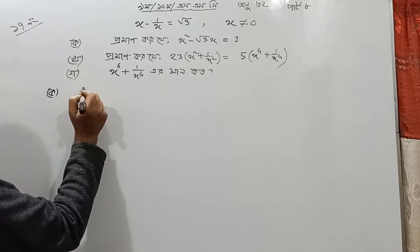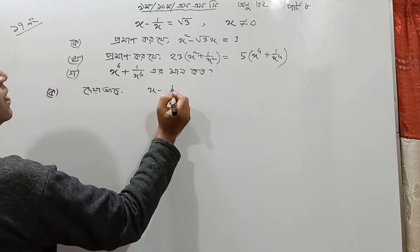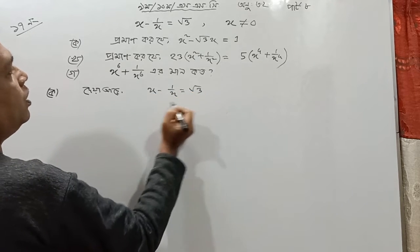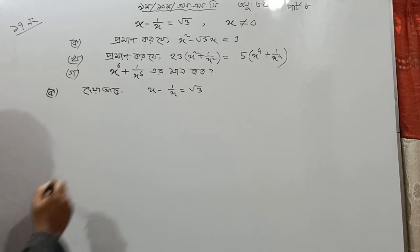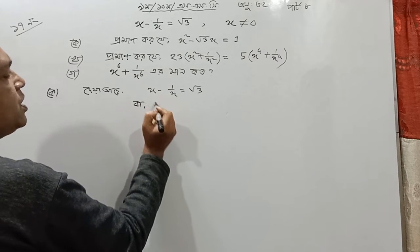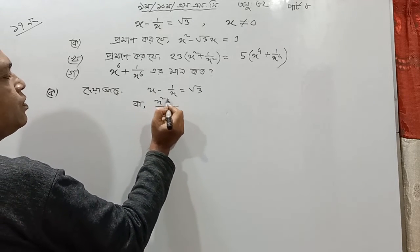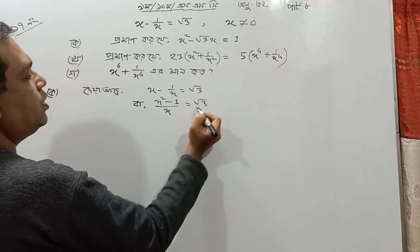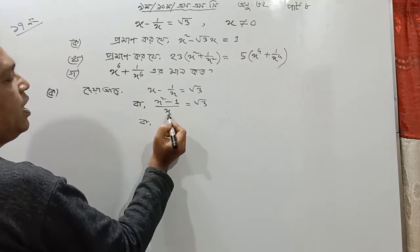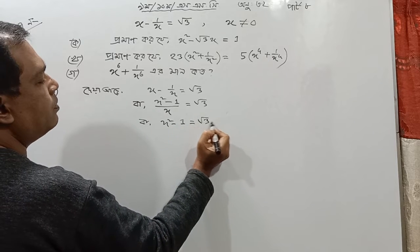I'm going to talk to you about x minus 1 by x times root 3, and x dx. We substitute x, then x squared minus 1, and by such way it's root 3x.